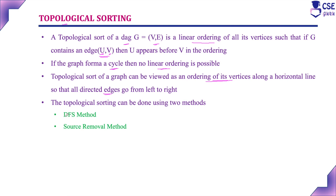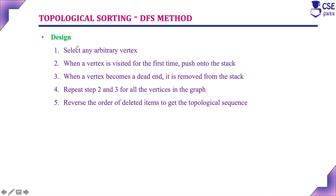Topological sorting can be implemented using two methods: one is the DFS method and another is the source removal method. First we will discuss the DFS method step by step — the design steps for the DFS method.